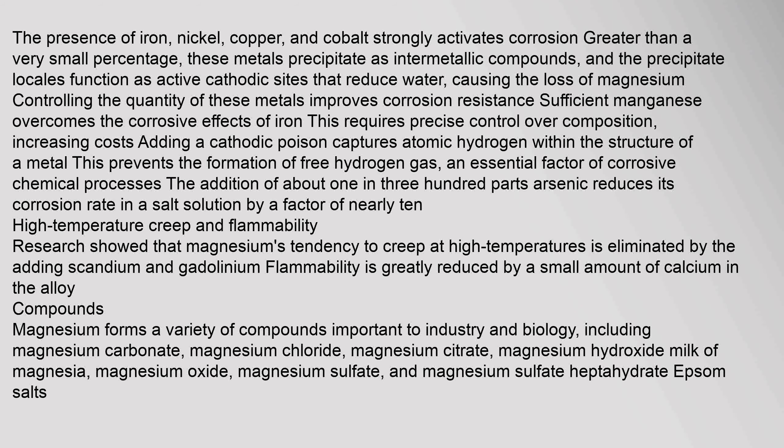Adding a cathodic poison captures atomic hydrogen within the structure of a metal, preventing the formation of free hydrogen gas — an essential factor of corrosive chemical processes. The addition of about 1 in 300 parts arsenic reduces its corrosion rate in a salt solution by a factor of nearly 10. Research showed that magnesium's tendency to creep at high temperatures is eliminated by adding scandium and gadolinium. Flammability is greatly reduced by a small amount of calcium in the alloy.